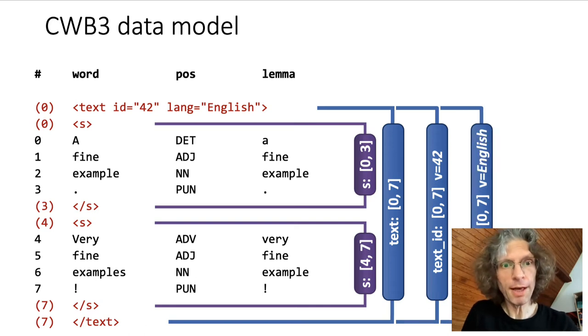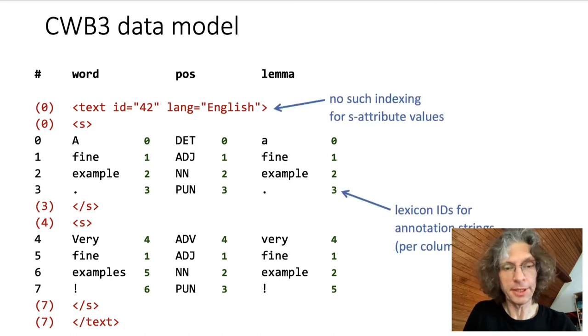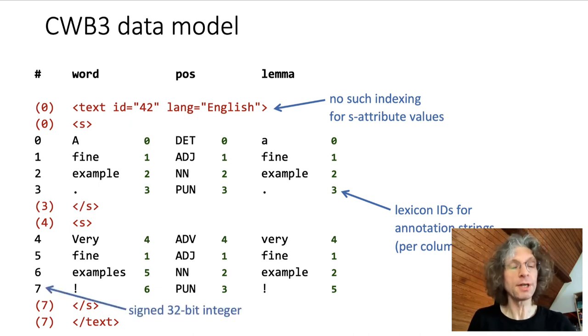In order to achieve fast lookup, CWB uses a lexicon-based indexing scheme, as shown here. For each annotation, that is, each column of the table, a separate lexicon of all possible annotation strings is created, and then we only store the lexicon ID numbers in the actual table. However, no such indexing is available for structural attributes. This storage model also explains the limitation to 2.1 billion words, because the corpus positions are stored as signed 32-bit integer values.